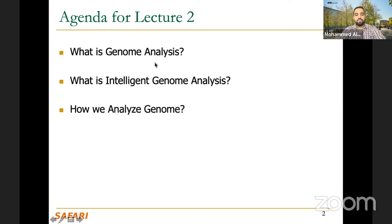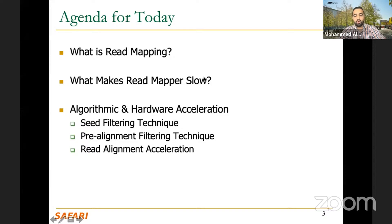In the previous lecture, we went through three sections: what is genome analysis, what is intelligent genome analysis, and how we analyze genomes. We agreed that we all get sub-sequences of our DNA from sequencing machines. Regardless of the sequencing machine you use, you get fragments of your DNA. Because of that limitation of the sequencing machine, we have a step called read mapping. If we didn't have that limitation, we probably wouldn't have a read mapping step. For today, we'll explain what read mapping is, what makes a read mapper slow, and we will go through algorithmic and hardware acceleration techniques — probably not during this lecture but during the next few lectures, five to six lectures only on this topic.